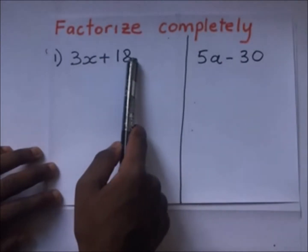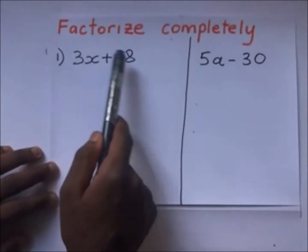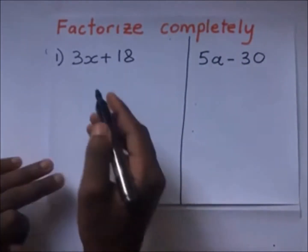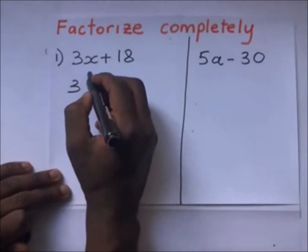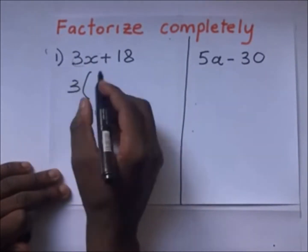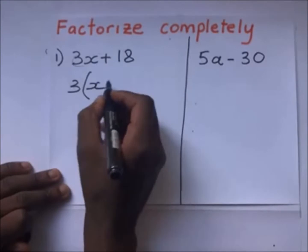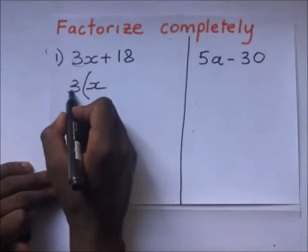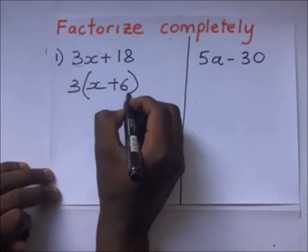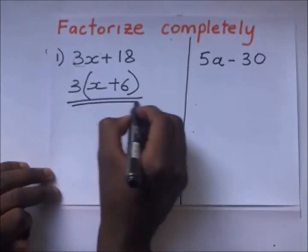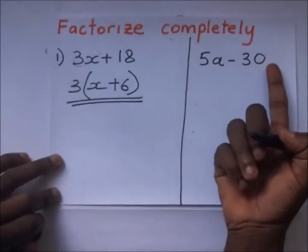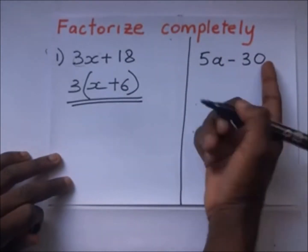Let's factorize this completely: 3x plus 18. The highest common factor here is 3, so you put 3 outside the brackets. 3x divided by 3 gives x, then 18 divided by 3 gives 6. So the answer is 3(x + 6).